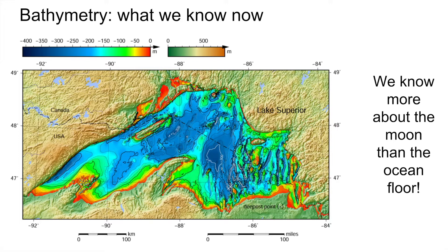While this is a great first step, a mapping of maximum resolution of around 5 kilometers is a less detailed map than we have of Mars, the Moon, and even Venus. This gap is due mainly to the fact that it is difficult to use satellites — a typical bathymetry method — because the ocean's water acts as a veil and blocks the radio waves.